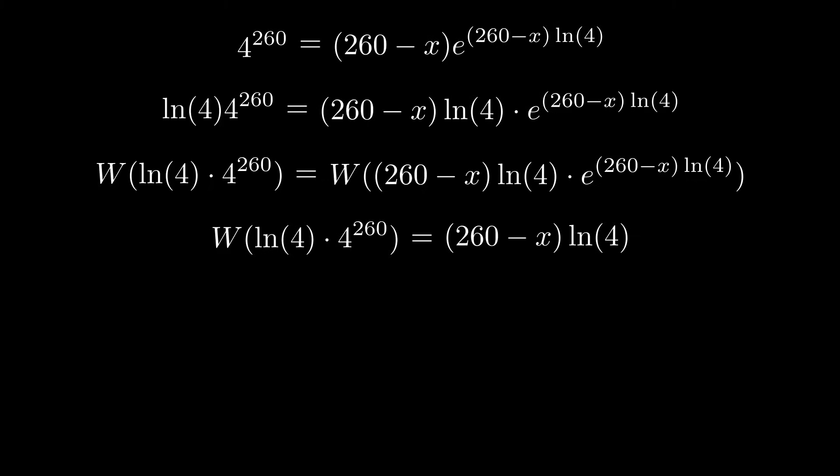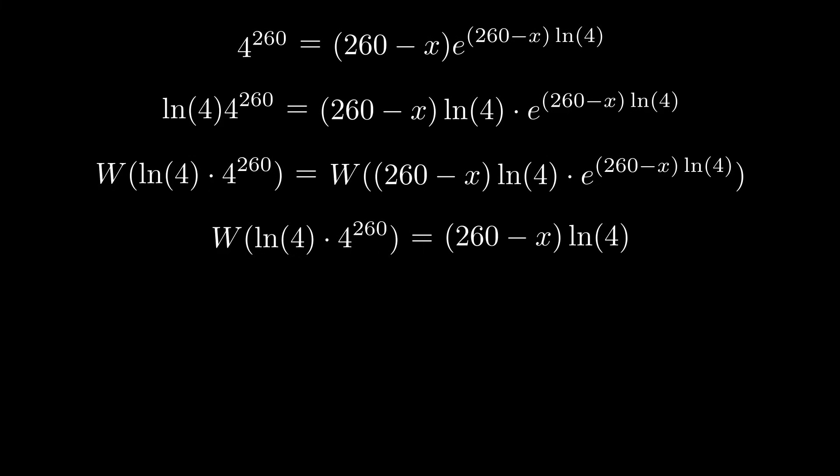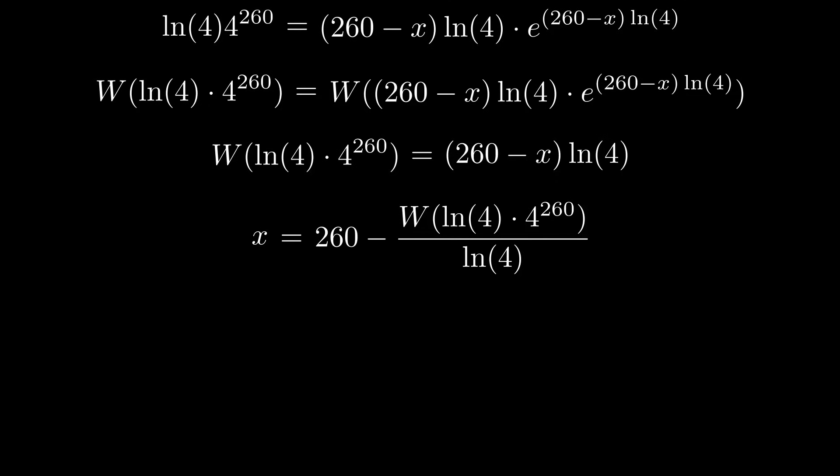And we've essentially reduced this crazy exponential problem to a linear problem. We can certainly isolate x by dividing by natural log 4, subtracting by 260, and multiplying by a negative.